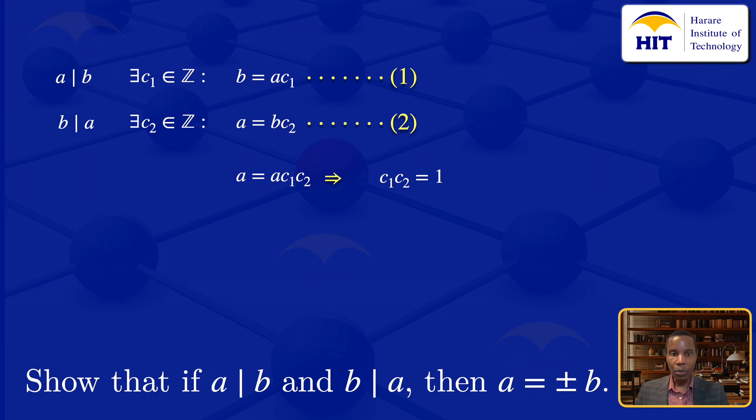Solving for C₁, we have C₁ = 1/C₂. But if divisibility holds, C₁ and C₂ are integers.